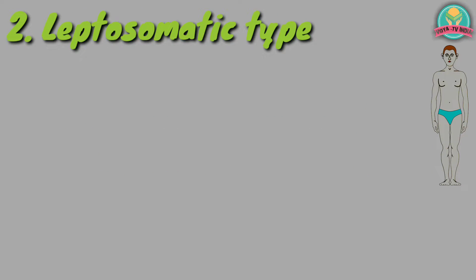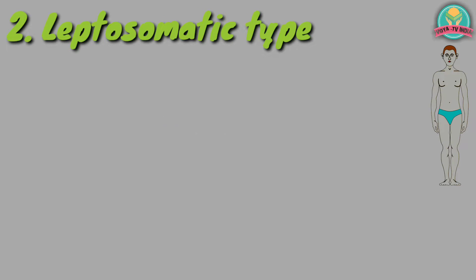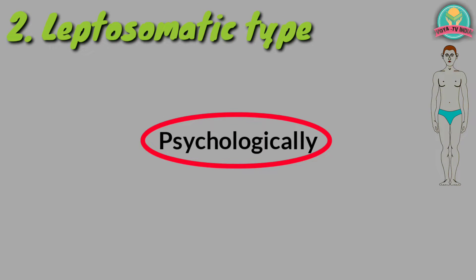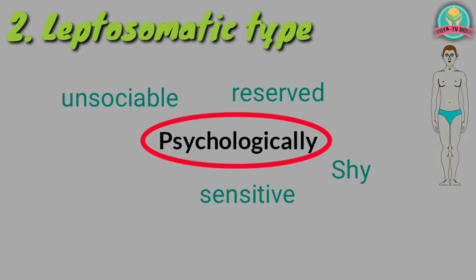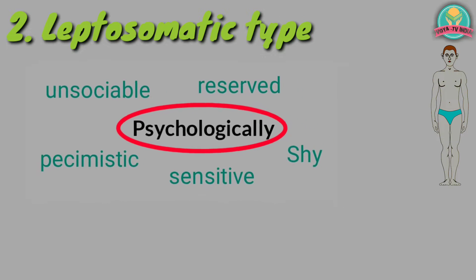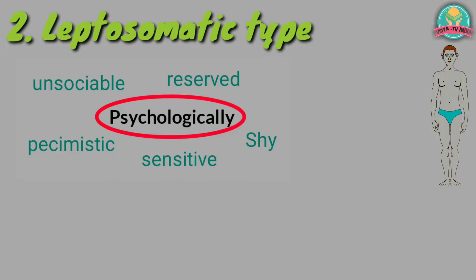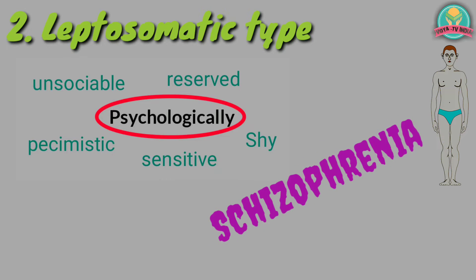Number 2: Leptosomatic type. These people will have a slender or slim body. They will have the personality traits of introverts. Psychologically the leptosomatic is unsociable, reserved, shy, sensitive, and pessimistic. These people are more prone to suffer from a serious mental disorder called schizophrenia.